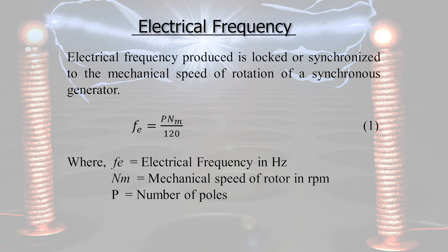In synchronous machines, these are basically constant speed machines. P is already fixed when construction is done, either 2 or 4 or whatever it is. The rotor speed Nm is adjusted in such a way that the required frequency is obtained. In our country, the power frequency is 50 hertz, and accordingly the rotor speed is chosen. These two quantities are linked — or in other words, synchronized — which is why the name is synchronous machine.